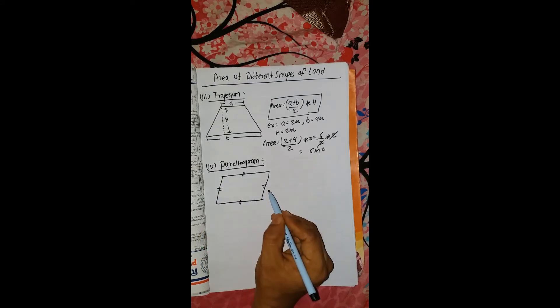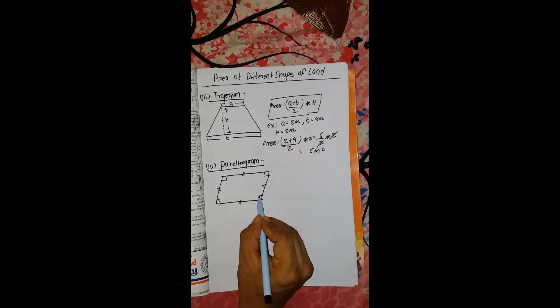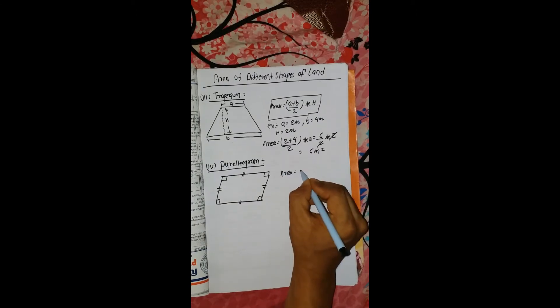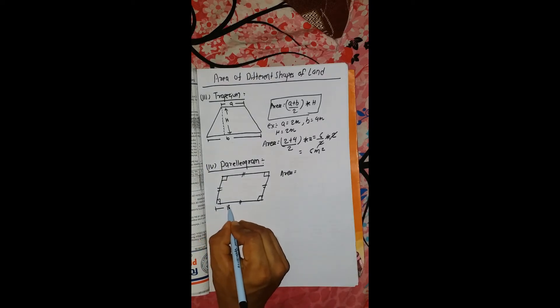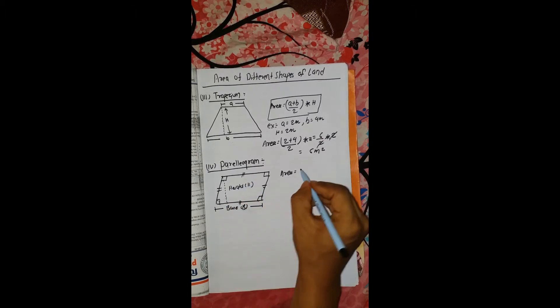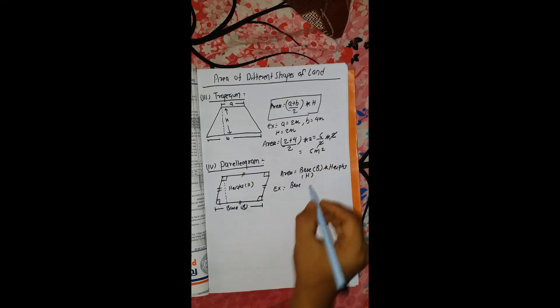For a parallelogram, the opposite angles are equal and the sides are equal. The area formula uses the base and height. Area is equal to base B multiplied by height h. So area equals base into height.